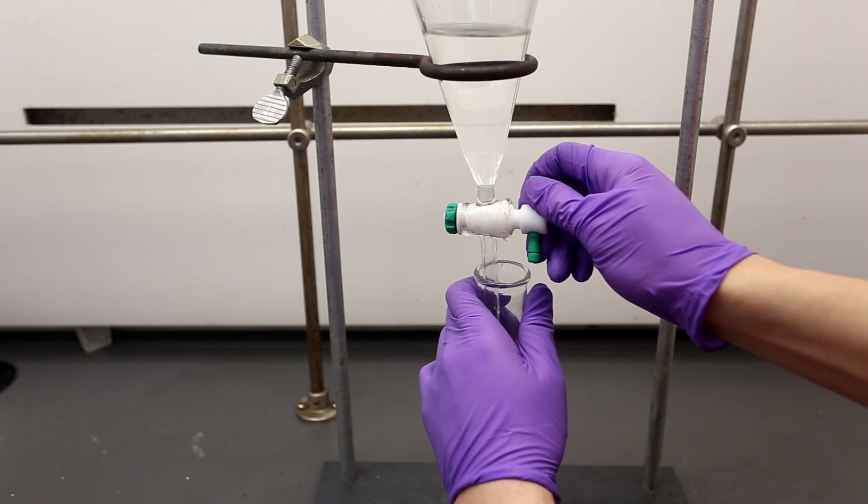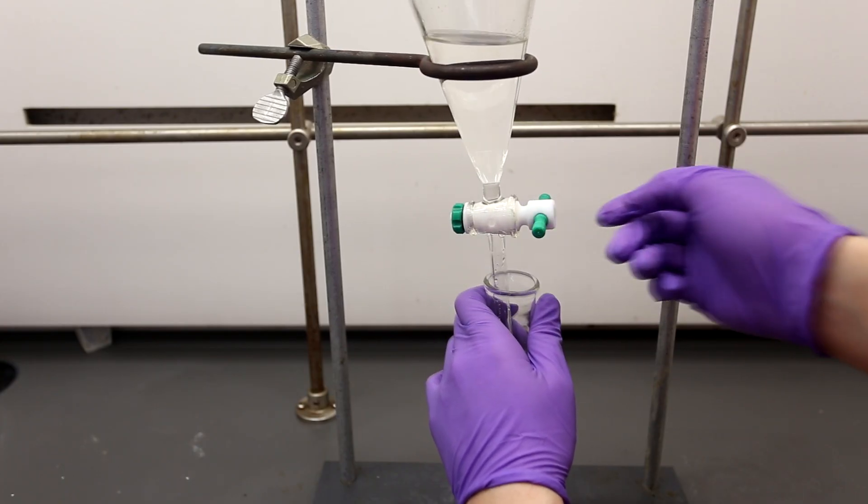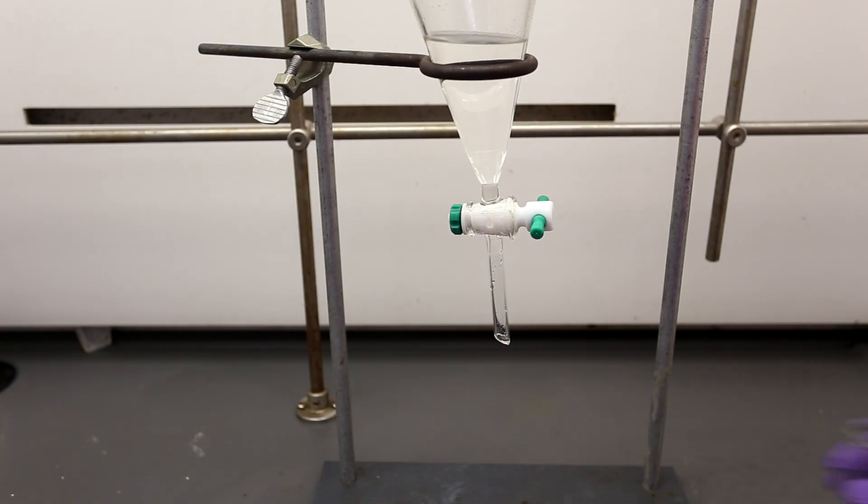Butyric acid is much more soluble in ether than in water, so most of the butyric acid should be in the ether layer, but some will be lost in the aqueous layer.